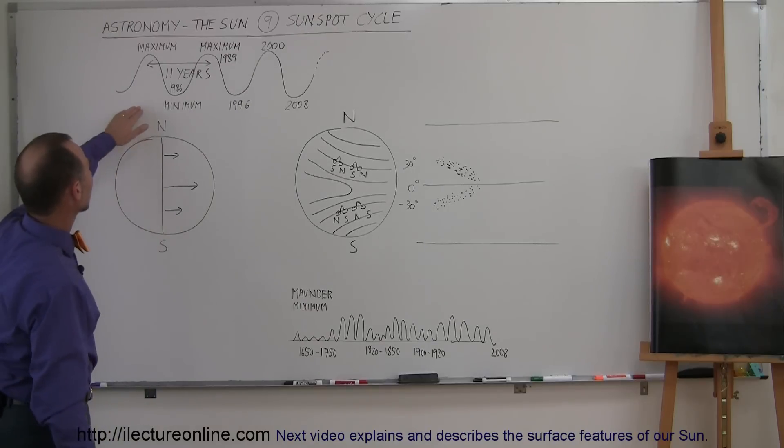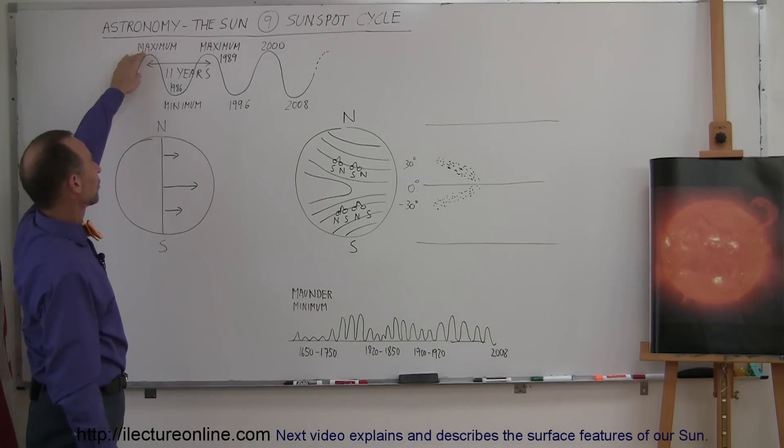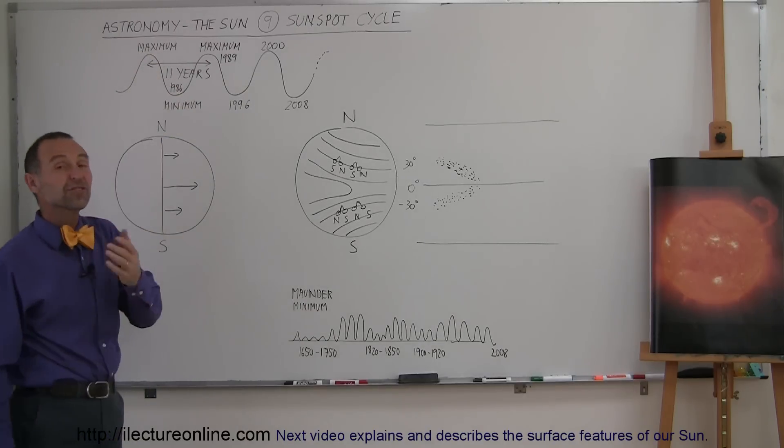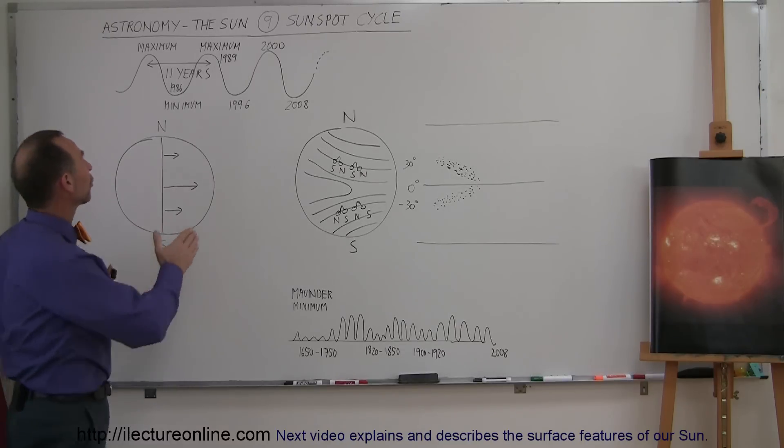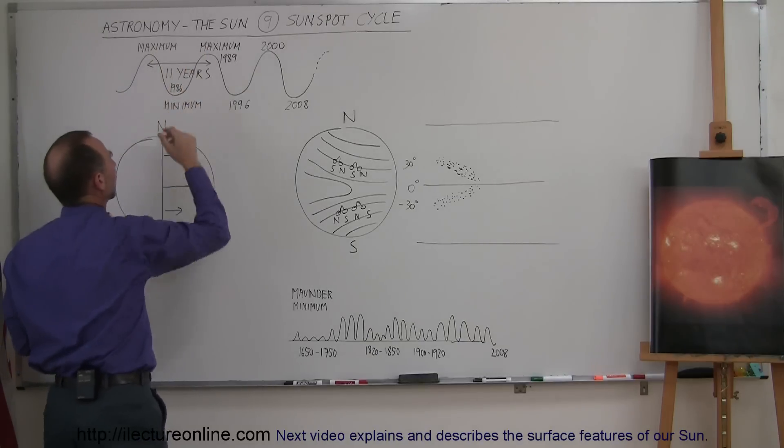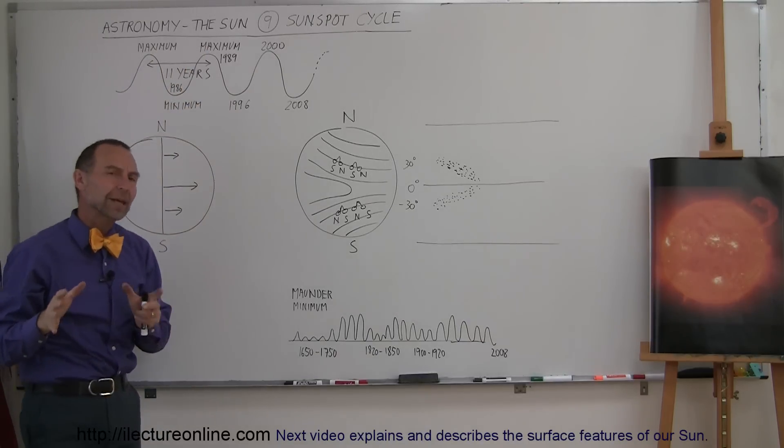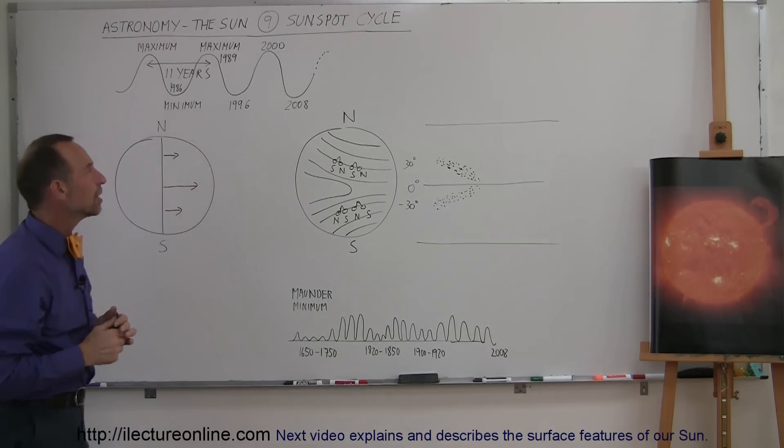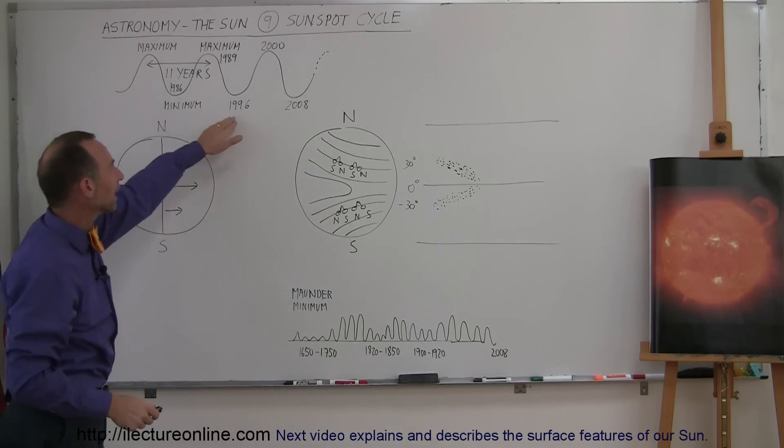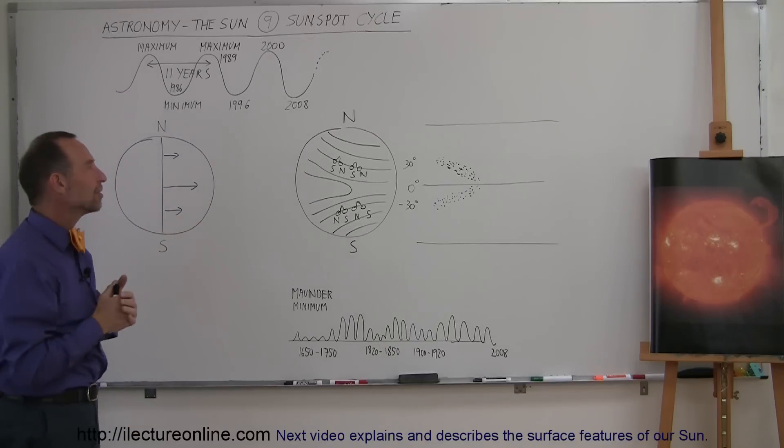In other words, there are periods where there's a lot of sunspots on the surface of the sun and then there's periods where there's almost none to actually none, no sunspots at all. And the time to go from one maximum to the next maximum is roughly 11 years. Sometimes it's 12 years, sometimes it's 10 years. Same from one minimum to the next. The period there is about 11 years as well.